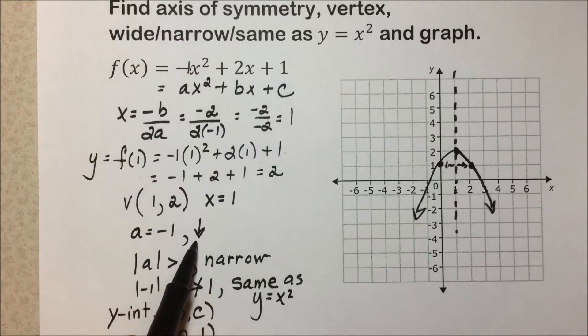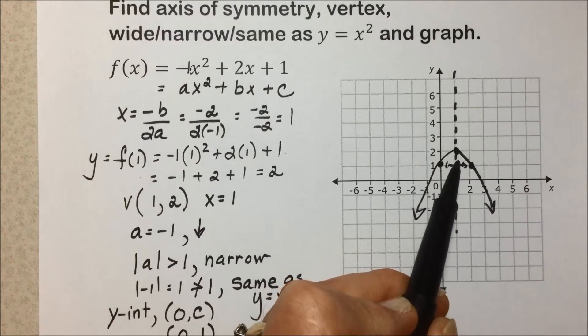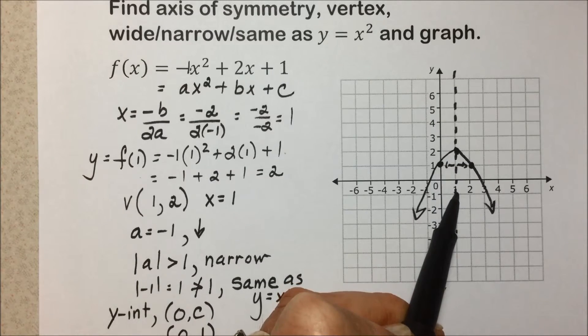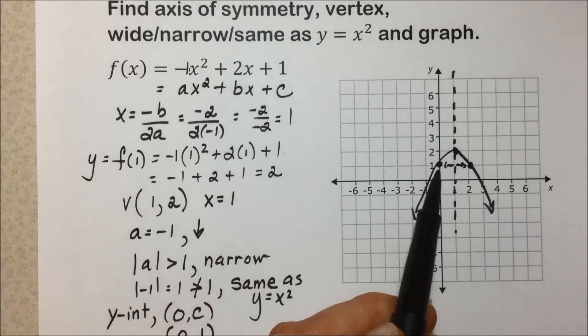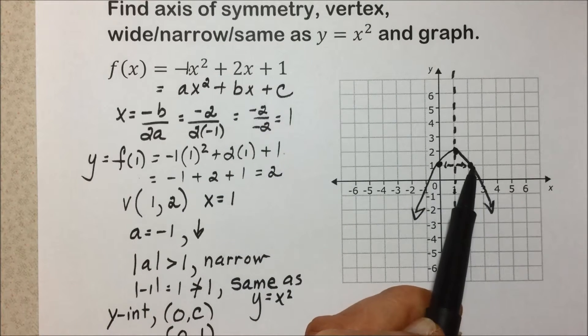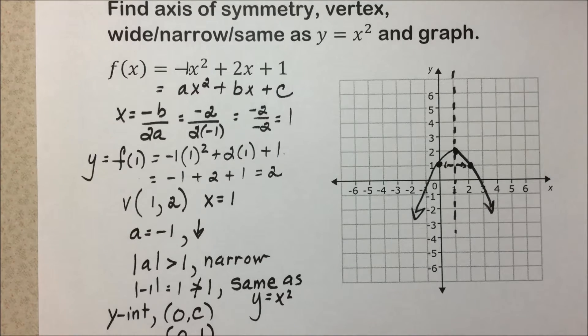But our parabola is opening downward as we expected. We have identified our vertex at the point (1, 2), our axis of symmetry. We have one point that we reflected to get a second point for a general shape for this problem.